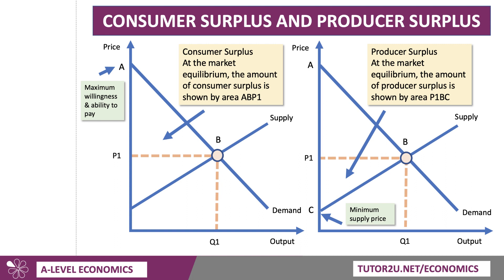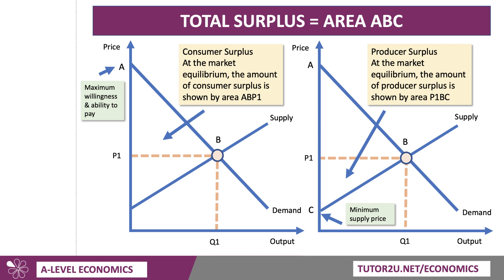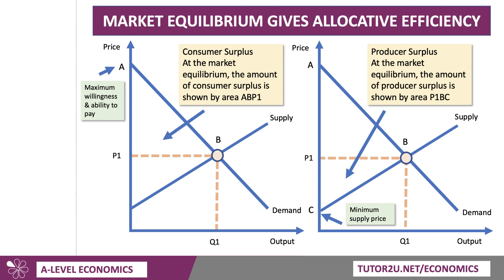Now, in the exam, please label rather than shade. Label your key areas — it's much neater, it's much cleaner, and it gives a really good impression. Shading is not good news in the exam. Total surplus is area A, B, C. If we add together consumer plus producer surplus, we get what you can call total surplus — you can also sometimes call it community surplus. And the equilibrium at point B gives us allocative efficiency. There's no bigger area of total consumer and producer surplus.